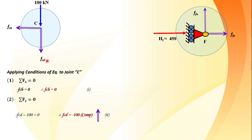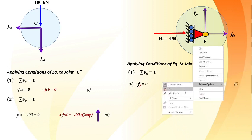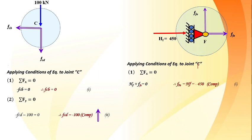Moving to joint F: applying sigma Fx = 0: HF + FFE = 0. Since the two horizontal forces are collinear and equal and opposite, FFE = -450, meaning it is compressive. For the vertical direction, since HF and FFE are collinear, the third force FFA must be zero by the null force condition.